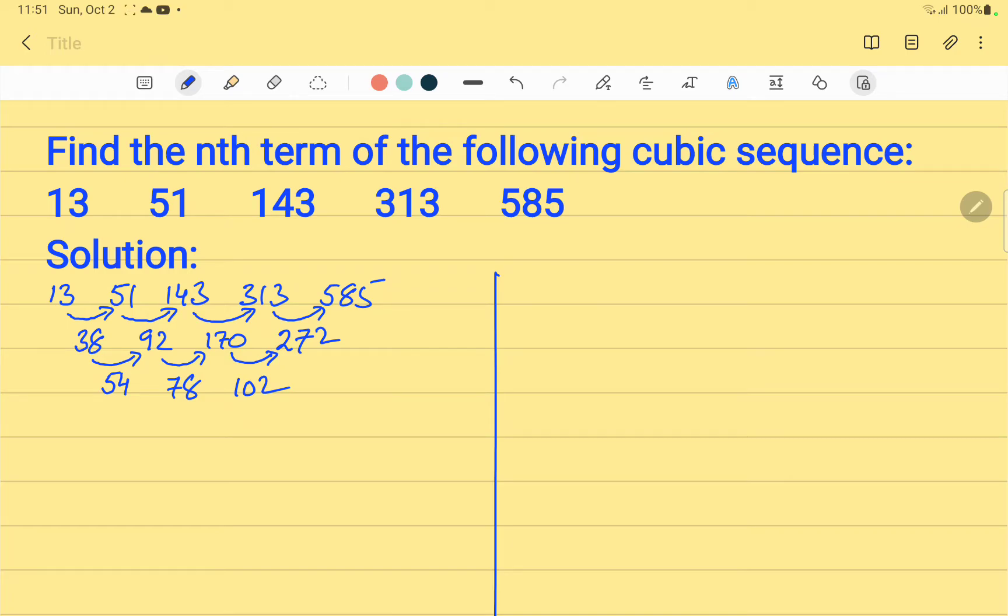Again, the differences are not the same and therefore we will go for the same step one more time. Let us subtract 54 from 78, we are getting 24. And by subtracting 78 from 102, we get 24.